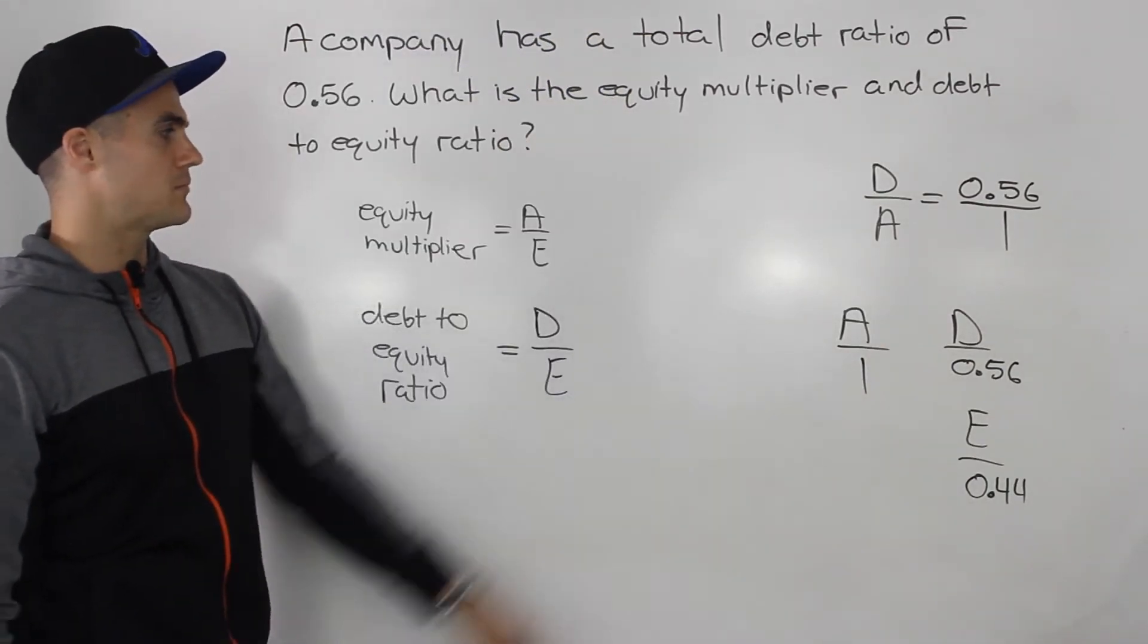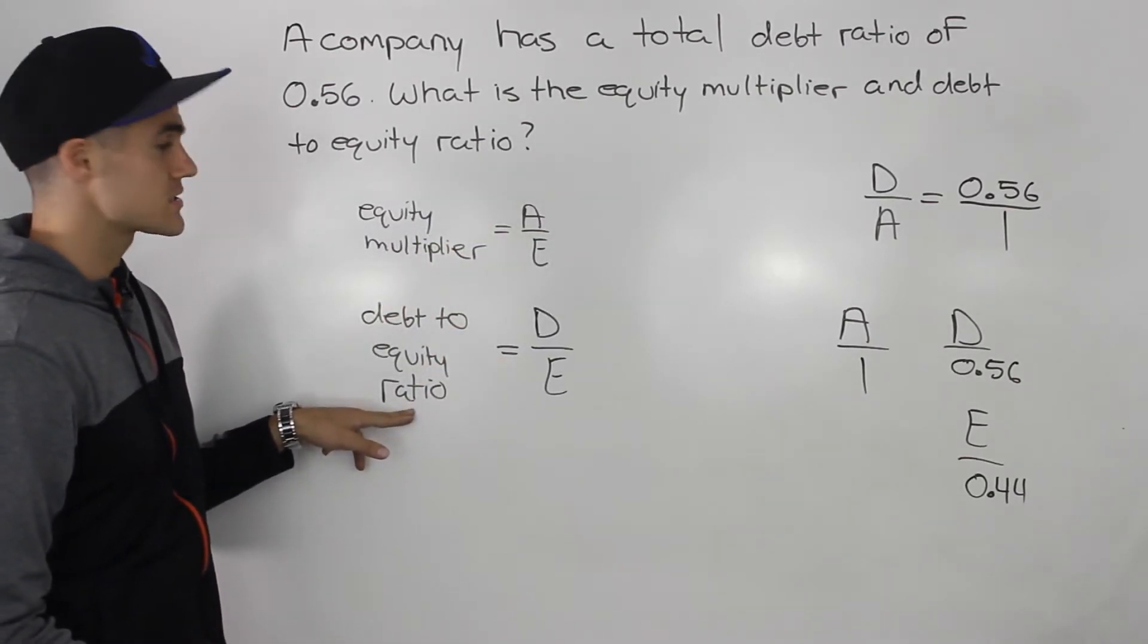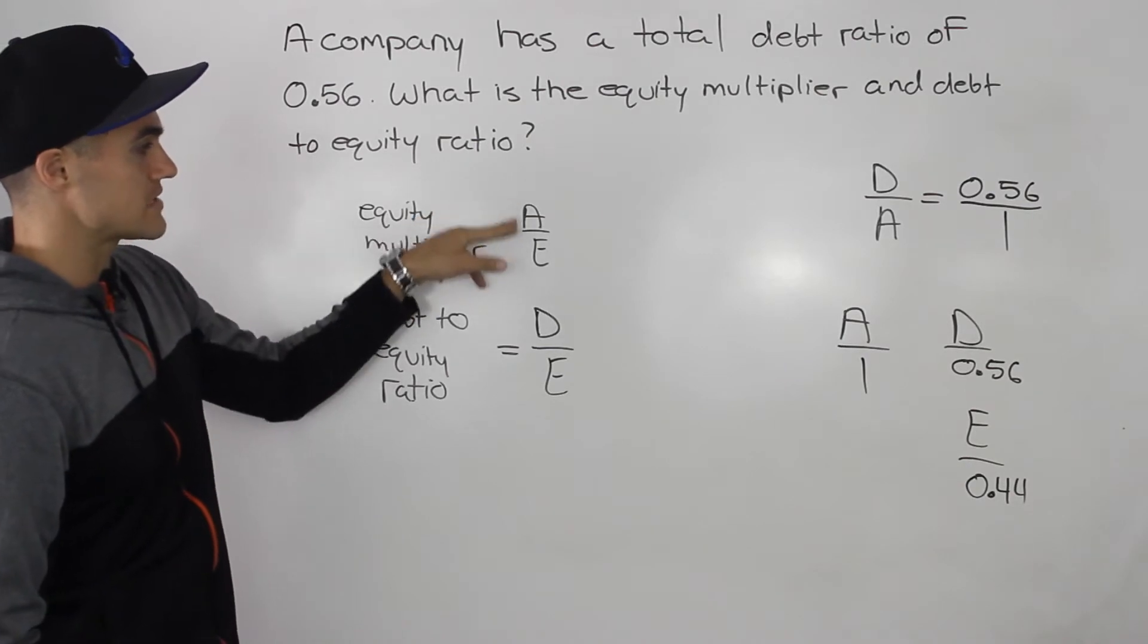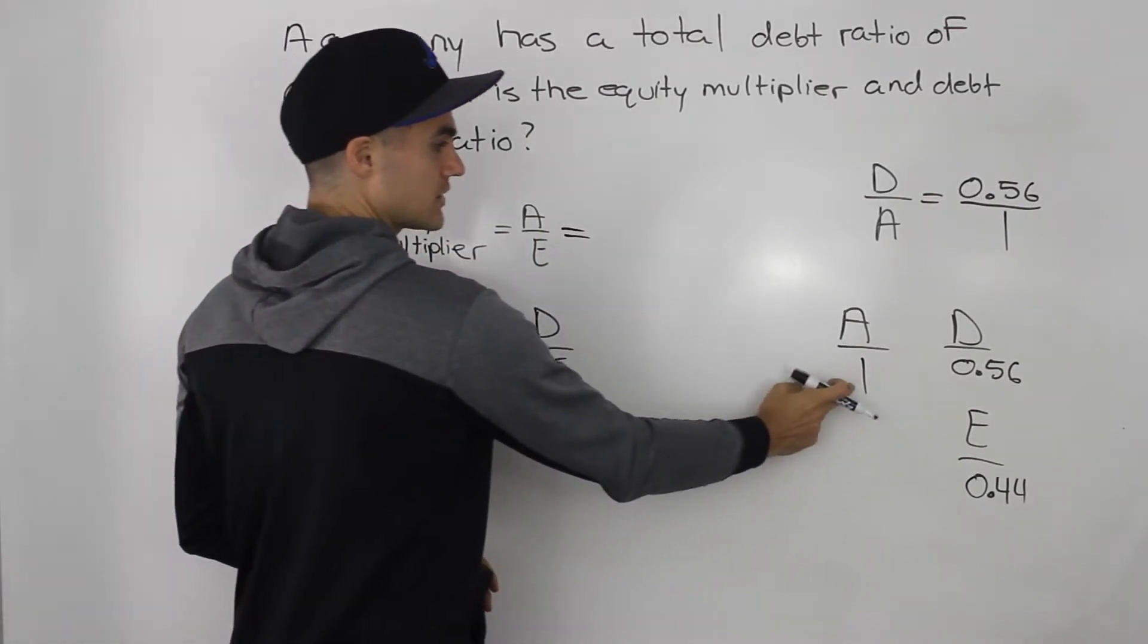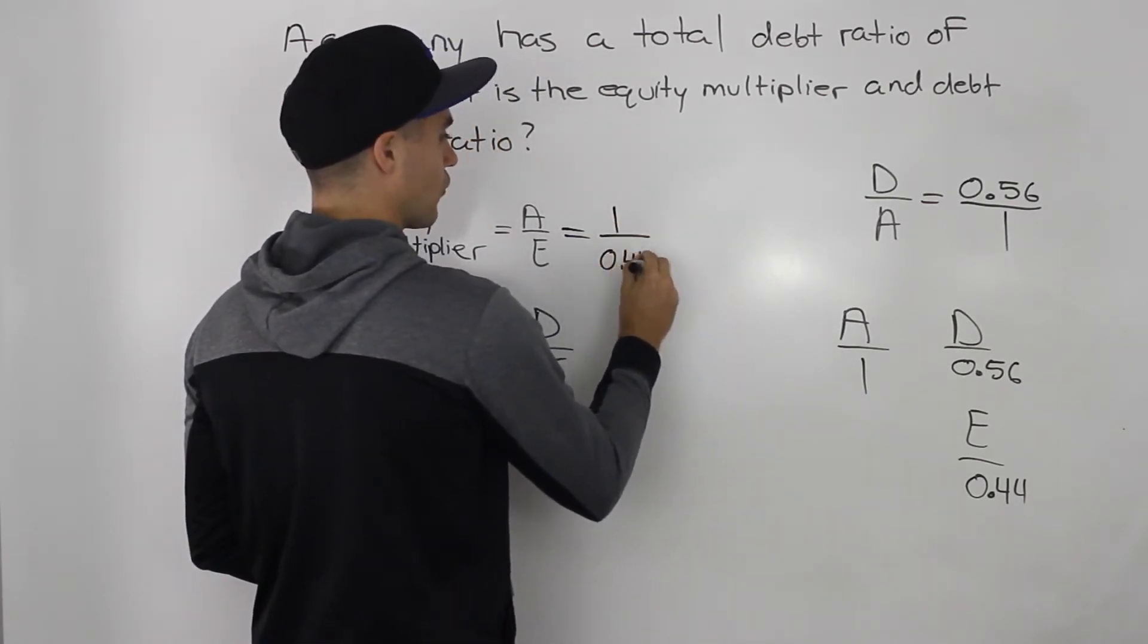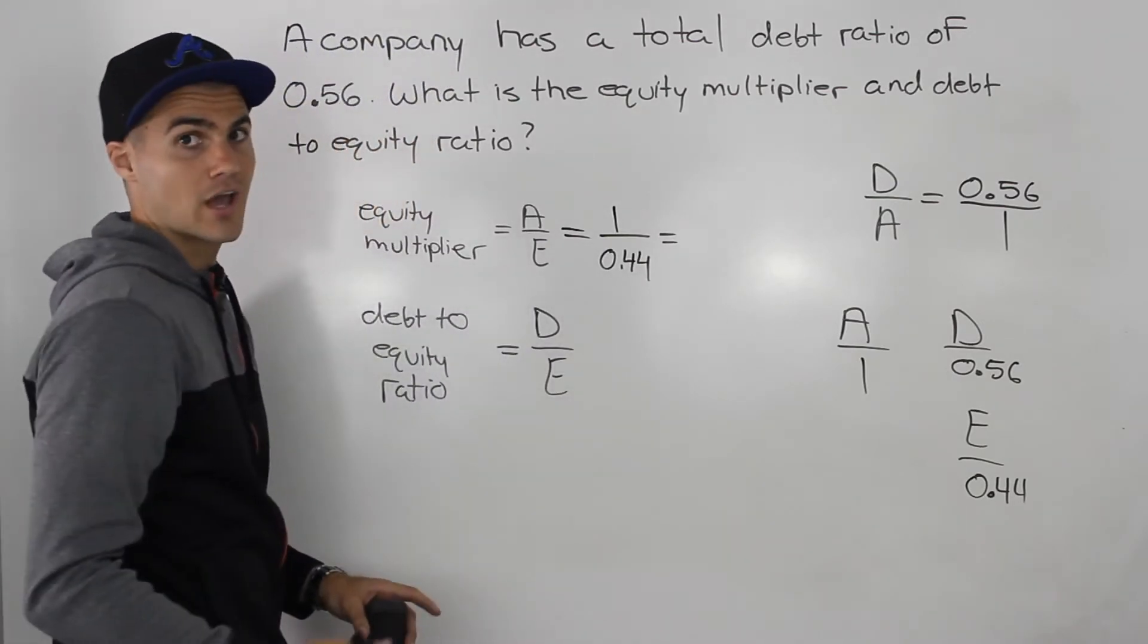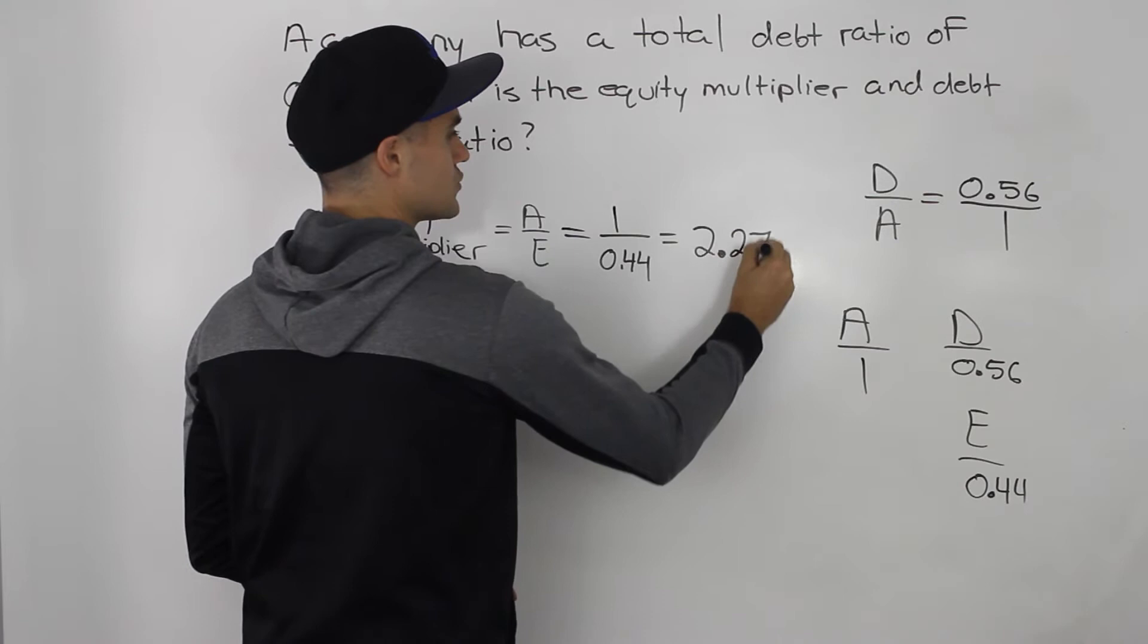And now that we have the mini balance sheet, we can find what the equity multiplier and the debt-to-equity ratio is. Equity multiplier, we know that's equal to assets over equity. So, from the mini balance sheet, that's just going to be 1 over the equity of 0.44. And when you do that in your calculator, you end up getting 2.27.